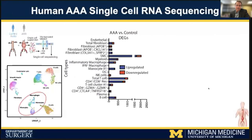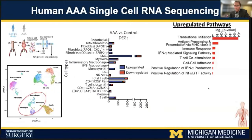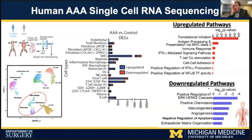We returned to our single-cell sequencing, specifically analyzing the monocyte macrophage population within abdominal aneurysms and non-aneurysmal controls. We identified differential gene expression analysis within that monocyte macrophage population and then conducted gene ontology analysis of those differentially expressed genes. The upregulated pathways within macrophages from abdominal aneurysms compared to non-aneurysmal controls include a marked upregulation of pro-inflammatory pathways, including T-cell co-stimulation, interferon gamma activation, and NF-kappa-B transcription factor activity. In contrast, there's a downregulation of anti-inflammatory pathways within the macrophage population, prompting us to determine what might be driving the upregulation in pro-inflammatory pathways.